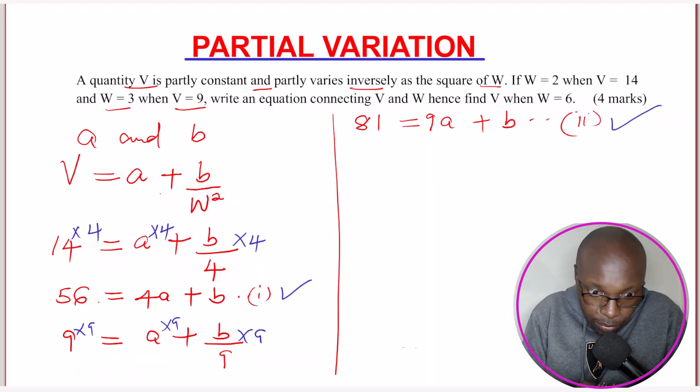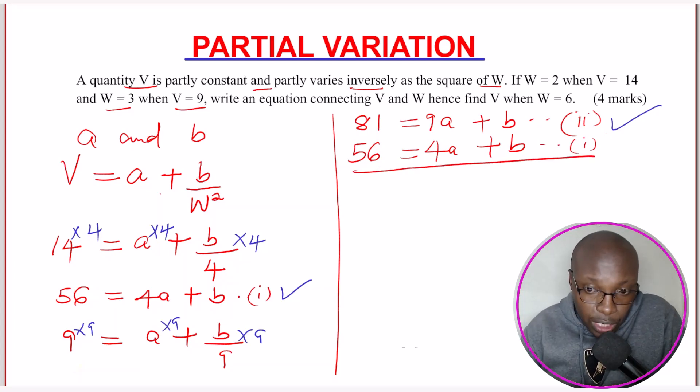So let me bring the other equation there. So 56 = 4A + B. So that is equation 1. So you can use any suitable method to solve these. I will use elimination.